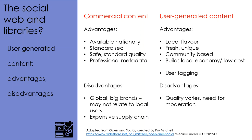Buying from publishers and other content creators means that you are guaranteed that the product is of a particular quality. Books have been through the editing process, there have been artists that created the cover images, and things have been through many checks and balances before they've actually been made for sale. Also alongside that is the professional metadata. Items are standardized and there would be many copies distributed across the state, country, or globe, meaning librarians can catalog the item using a centralized pool of professionally created metadata. We have standard vocabularies, and the metadata will remain the same no matter which library you are in.